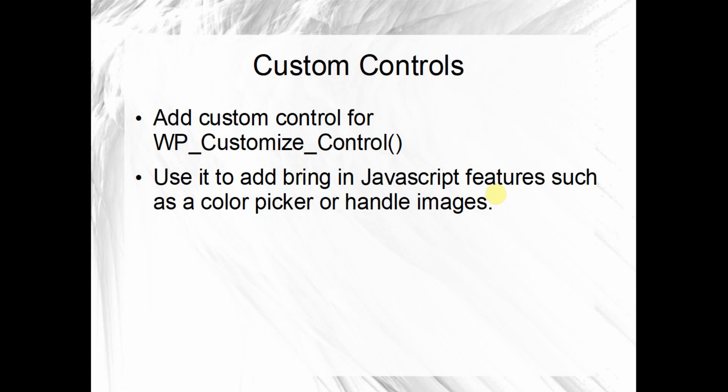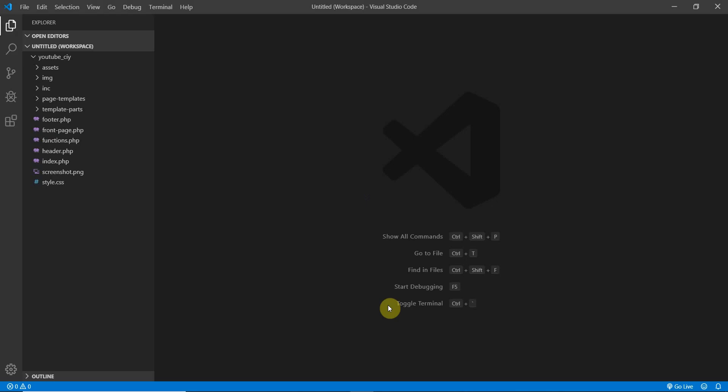Notice the capital letters in WP_Customize_Control — every word needs to be capitalized. We use it to add JavaScript features such as a color picker or to handle images. We'll look at an example when we upload the background image for the full-screen landing page.